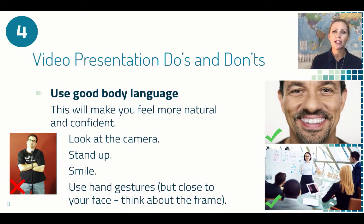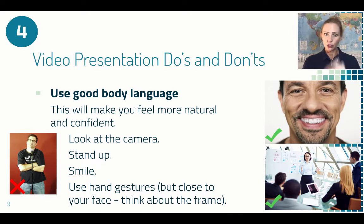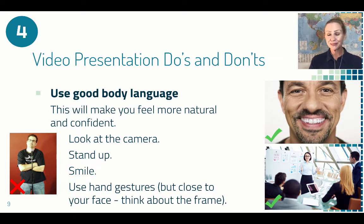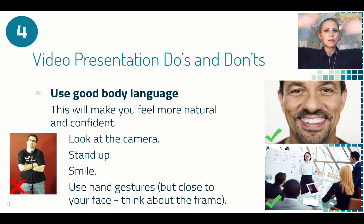Tip number four is use good body language. The better your body language, the more natural and confident you will feel. If you have good body language, it will make you feel more comfortable doing your presentation. You need to look at the camera. You need to stand up — sitting down, people usually look less strong and confident. If you stand up for your presentation, you will feel more confident. You need to smile, as it helps you feel more relaxed. You can use hand gestures, but make sure they're close to your face in the frame, because if you gesture out wide, people won't see it.